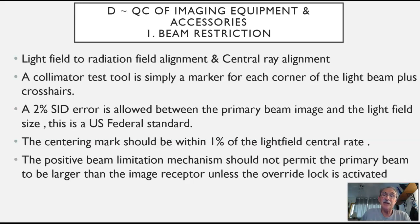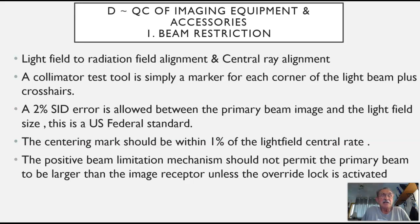Additionally, we'll put a mark right in the very center of the central ray. The tolerances are: 2% source to image receptor error is allowed between the primary beam image and the light field size — this is a United States federal standard. The centering mark should be within 1% of the light field central ray. These quality control tests ensure that when we're aiming the central ray at our patient, we are capturing the anatomy we want to see, as opposed to being several inches off.